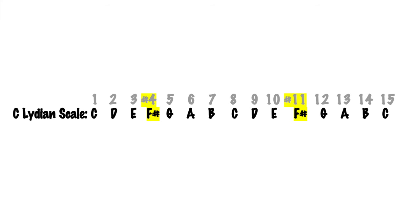By the way, a sharp 4 and a sharp 11 are actually the same note, as you can see from this diagram of the scale. Everything basically repeats itself in the 2nd octave. So we use terms like sharp 4 and sharp 11 interchangeably. Watch out if ever you see a chord like a C major 7 sharp 11 — that's a big clue that you need a scale with a sharp 11. That is Lydian.